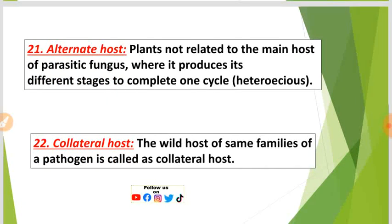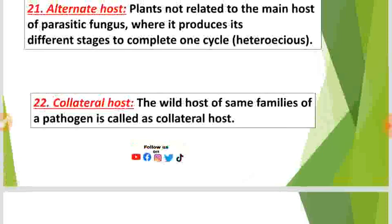Number twenty-one: Alternate host — plants not related to the main host of a parasitic fungus, where it produces different stages to complete one cycle (heteroecious). For example, barberry is the alternate host of wheat rust, and wheat and barberry belong to different families. Number twenty-two: Collateral host — the wild host of the same family of a pathogen.